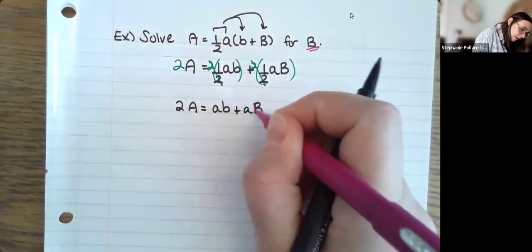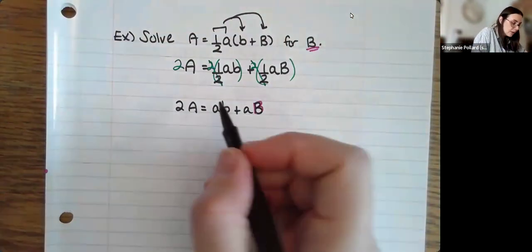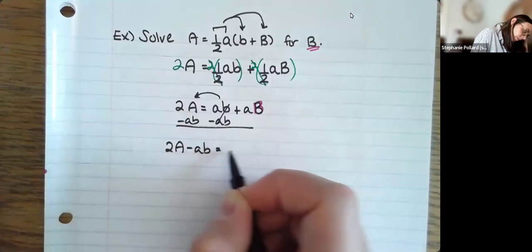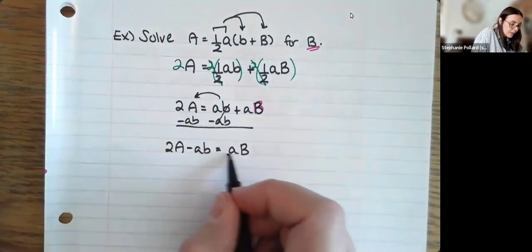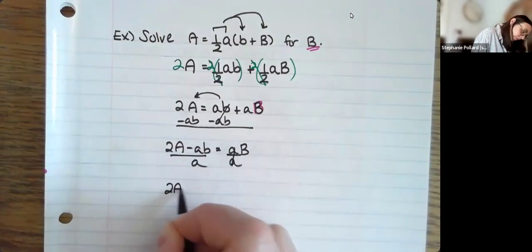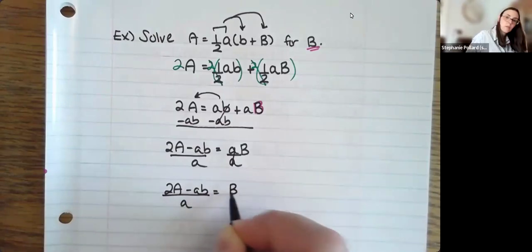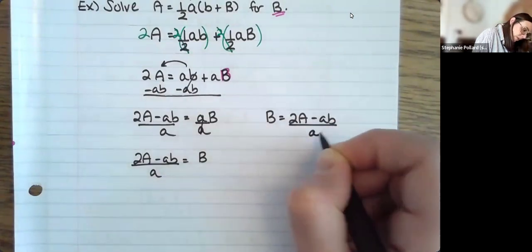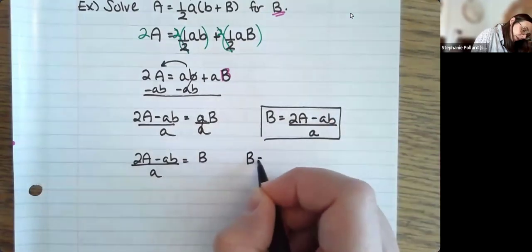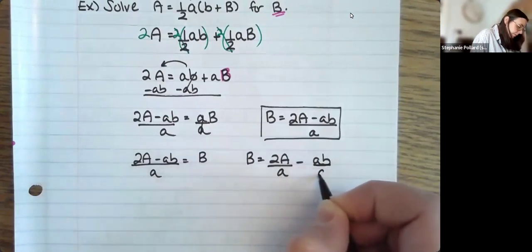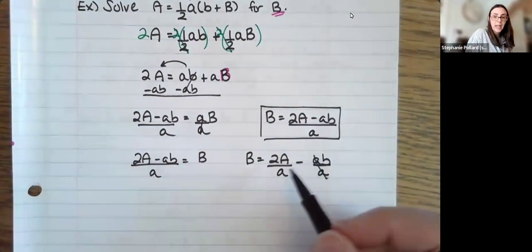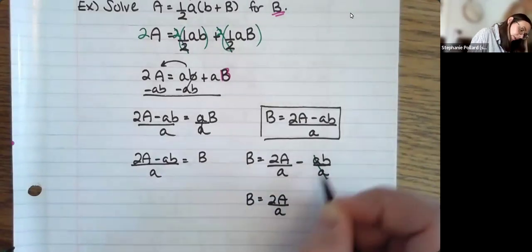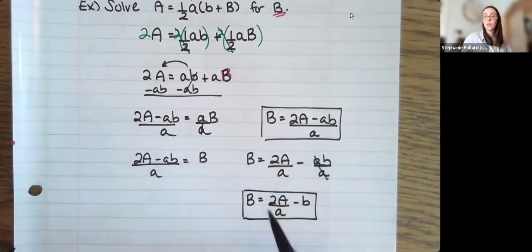All right, so now I'm solving for capital B. So I want that capital B to be alone. So I'm going to start by getting rid of this piece over here. It's being added, so I'm going to subtract it to both sides. And then I can finally divide by that lowercase A. So for my final answer here, B is equal to 2A minus AB all over A, which is perfectly fine. Or if you do want to split that, it'd be 2A over A minus AB over A. I can cancel these A's here. These I cannot cancel because a capital and lowercase A are different. So if I want to simplify that, I can only cancel it from this piece here. And this answer is also considered correct.